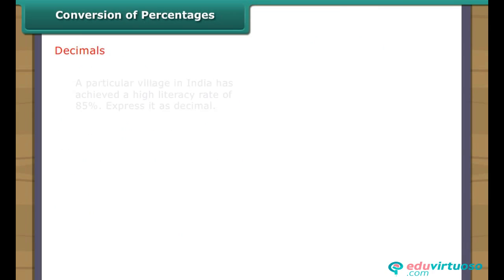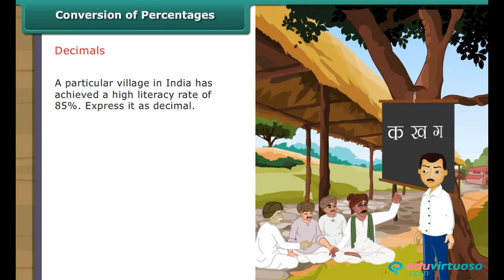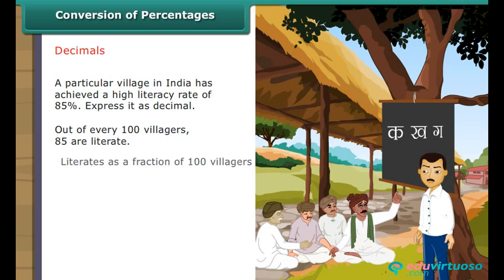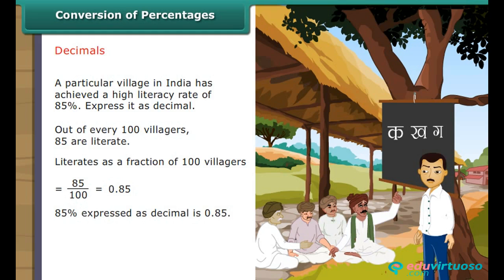Decimals: A village in India has achieved a literacy rate of 85%. Out of every 100 villagers, 85 are literate. Literates as a fraction = 85/100 = 0.85. Therefore, 85% expressed as a decimal is 0.85.